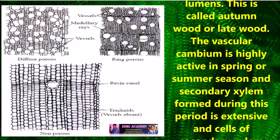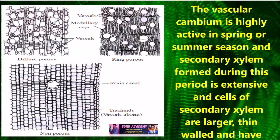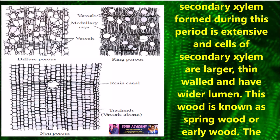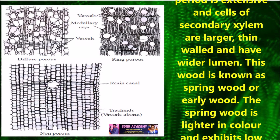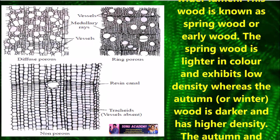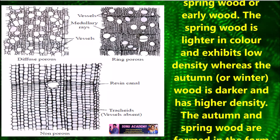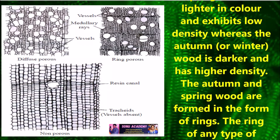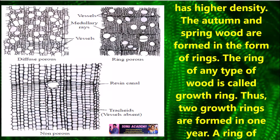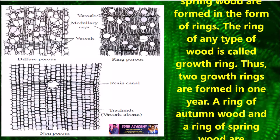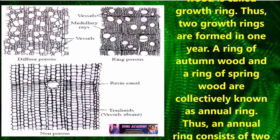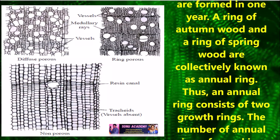The vascular cambium is highly active in spring or summer season and secondary xylem formed during this period is extensive; cells are large, thin-walled, and have wider lumens. This wood is known as spring wood or early wood. Spring wood is lighter in color and exhibits low density, whereas autumn wood is dark and has higher density. The autumn and spring woods are formed in the form of rings, called growth rings. Two growth rings formed in one year — one of autumn wood and one of spring wood — are collectively known as annual rings.